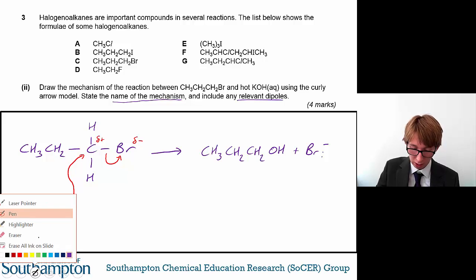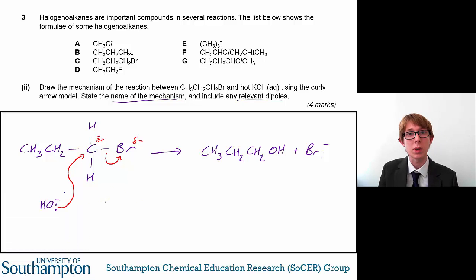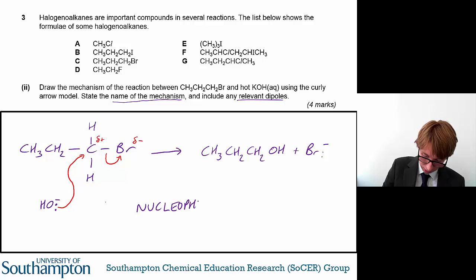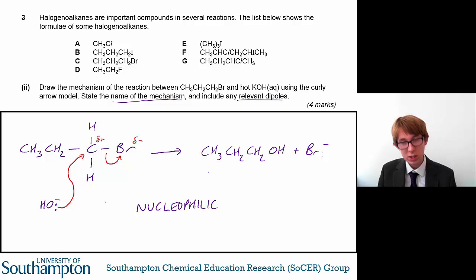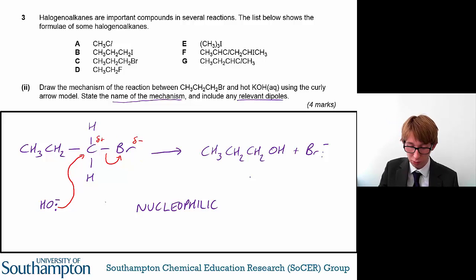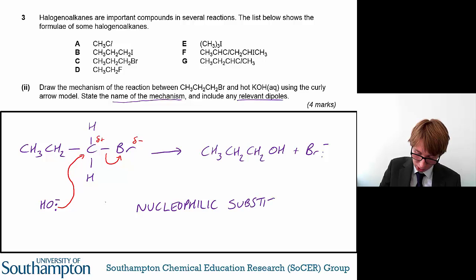There's a clue as to what the name of the mechanism is. The OH minus here is a nucleophile because it is an electron pair donor, so this is a nucleophilic reaction. What this nucleophile causes is a substitution — the OH minus substitutes for the bromine. So the hydroxide substitutes for the bromine, giving you a nucleophilic substitution.